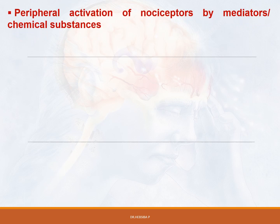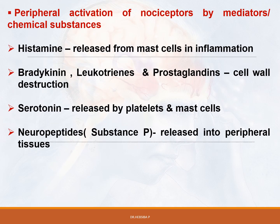The peripheral activation of nociceptors occurs through mediators or chemical substances: histamine, released from mast cells in inflammation; bradykinin, leukotrienes and prostaglandins from cell wall destruction; serotonin, released by platelets and mast cells; and neuropeptides, otherwise known as substance P, released into peripheral tissue.